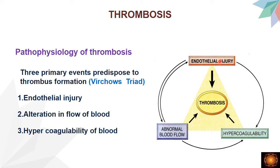The endothelial cells normally have anticoagulant properties, so when there is damage or activation of the endothelial cells, they switch from anticoagulant to procoagulant properties, leading to hypercoagulability and thrombus formation. Similarly, when there is abnormal blood flow — stasis or turbulence — there will be endothelial injury causing hypercoagulability. In stasis, coagulation factors are not washed out, further causing hypercoagulability. All three factors are interrelated and form Virchow's triad.